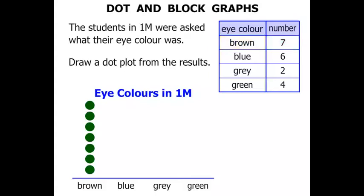Now for blue eyes there were six students. 1, 2, 3, 4, 5, 6. Six dots represent six students.